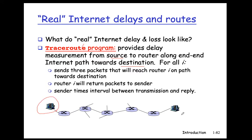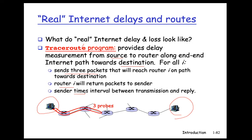It sends three packets, one at a time, to reach each of the routers along the way. A router receiving such a packet will return a reply back to the sender. The sender times the interval between transmission and receiving the reply, and gets one estimation of the round trip time between the sender and that router. So it works like this: three probes to the first router give three round trip time estimates; three probes to the second router give three more estimates. This goes on until it reaches the final destination, and then the TraceRoute program stops.